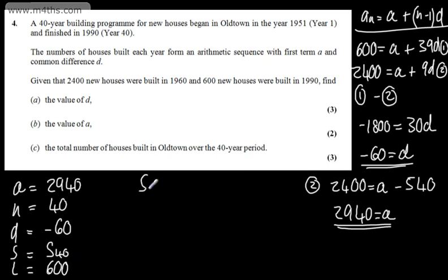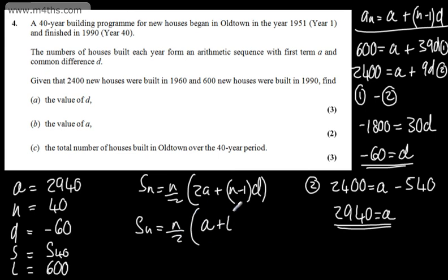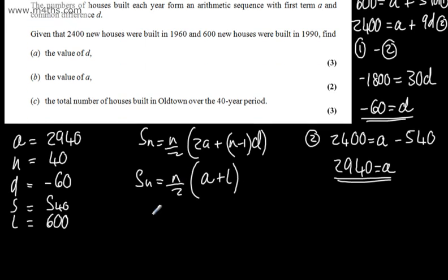Using either formula, we can have S of N is equal to N over 2, 2A plus N minus 1D, or we can have the sum of N terms is equal to N over 2, A plus L, where A is the first term and L is the last term. I'm going to use this second one. So the sum of the first 40 terms is 40 over 2, so 40 divided by 2. We've got the first term, which is 2940, plus the last term, which is 600.